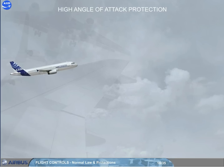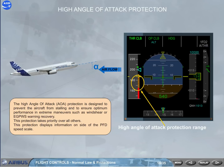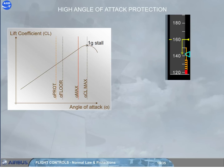The high angle of attack protection is designed to prevent the aircraft from stalling and to ensure optimum performance in extreme maneuvers such as wind shear or EGPWS warning recovery. This protection takes priority over all others and displays information on the side of the PFD speed scale. Key definitions: VLS is the lowest selectable speed related to the stalling speed. V-alpha-prot is the speed related to the angle of attack at which protection becomes active. V-alpha-max is the speed related to the maximum angle of attack that may be reached in pitch normal law.